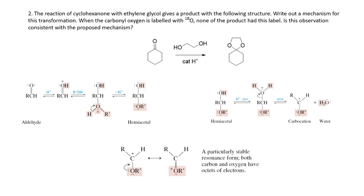Now let us move on to the next question, which is to propose a mechanism for the reaction of cyclohexanone with ethylene glycol to give the cyclic acetal as the product. Another piece of information given is that if the carbonyl oxygen is isotopically labeled, none of that label appears in the product as shown.